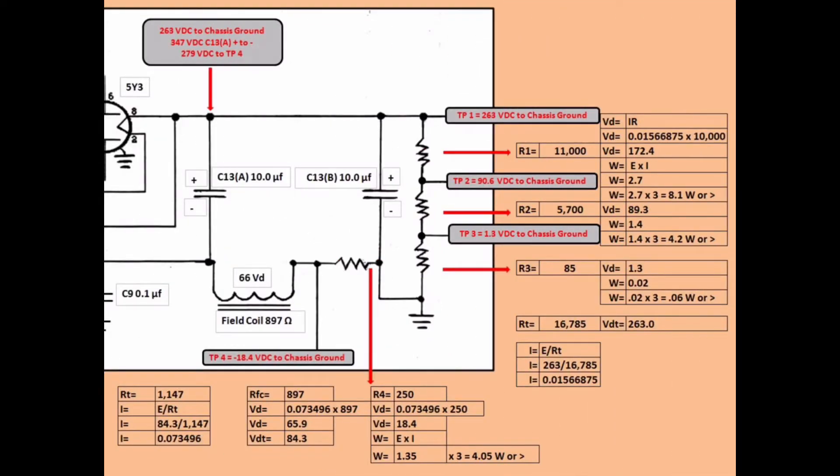Before we move along to the voltage divider, let's look one more time at the power supply. This particular power supply utilizes two electrolytic capacitors. The choke, which is the field coil itself, does all the filtering of the DC, cleans it up from the output side of that rectifier tube.